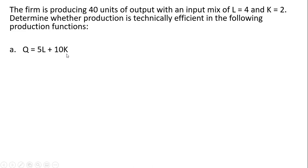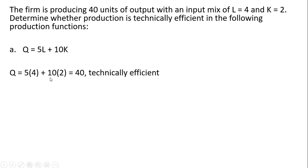In scenario 1, the firm's output is characterized by this production function, and the firm is producing 40 units of output with this input mix. When we plug L equals 4 and K equals 2 into this production function, the firm should be able to produce 40 units, and that is what it is currently doing. So this output-input combination is technically efficient — the firm is getting the most it can from this resource combination.